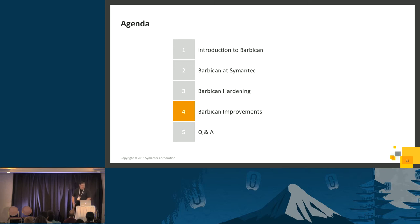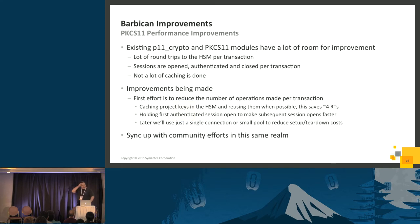Moving on to improvements we're doing. The first is performance improvements in Barbican's PKCS11 module. The current module has a lot of room for improvement — there are many round trips to the HSM per transaction. It opens a new session, authenticates, does what it needs to, then closes the session for every transaction. It also doesn't cache things that could be cached. So we're looking at reducing operations against the HSMs by caching data where possible.